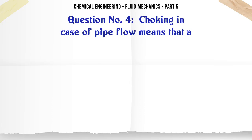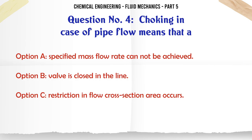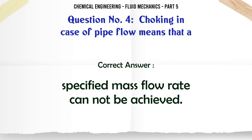Choking in case of pipe flow means that: a) specified mass flow rate cannot be achieved, b) valve is closed in the line, c) restriction in flow cross-section area occurs, d) none of these. The correct answer is specified mass flow rate cannot be achieved.